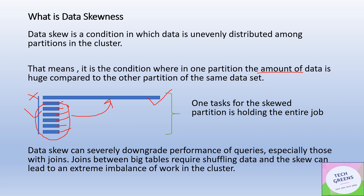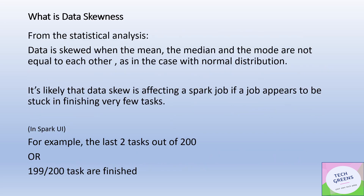From a statistical analysis perspective, data is skewed when the mean, median, and mode are not equal to each other. When data is perfectly normally distributed, these three values would all be the same. A deviation from this equality signals skewness.